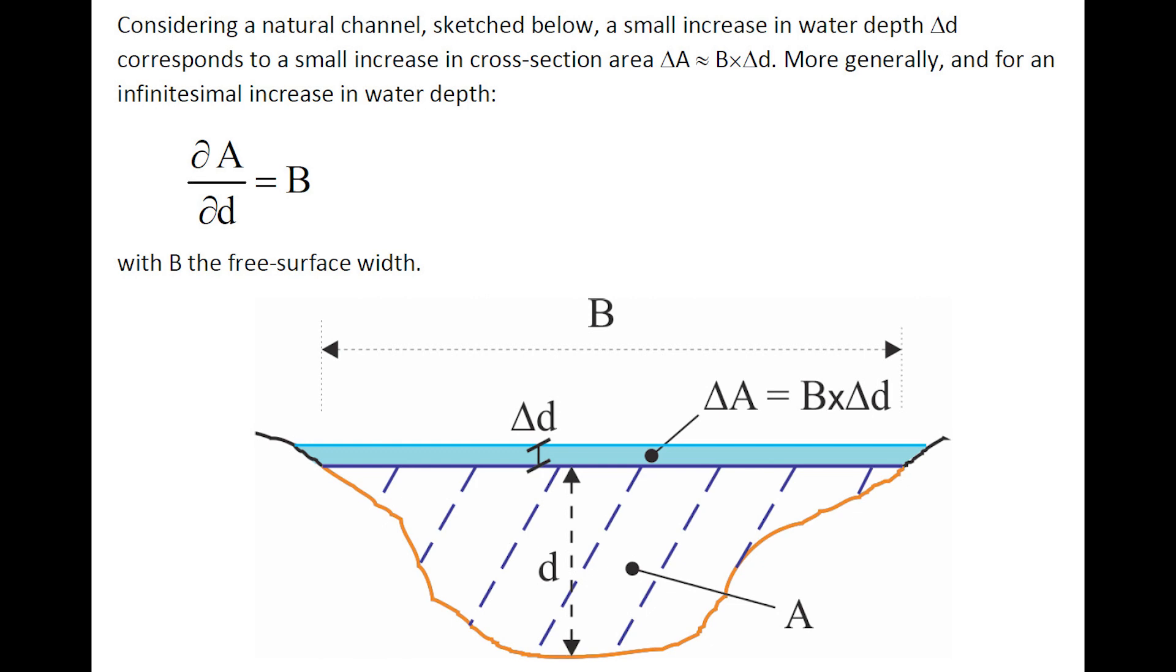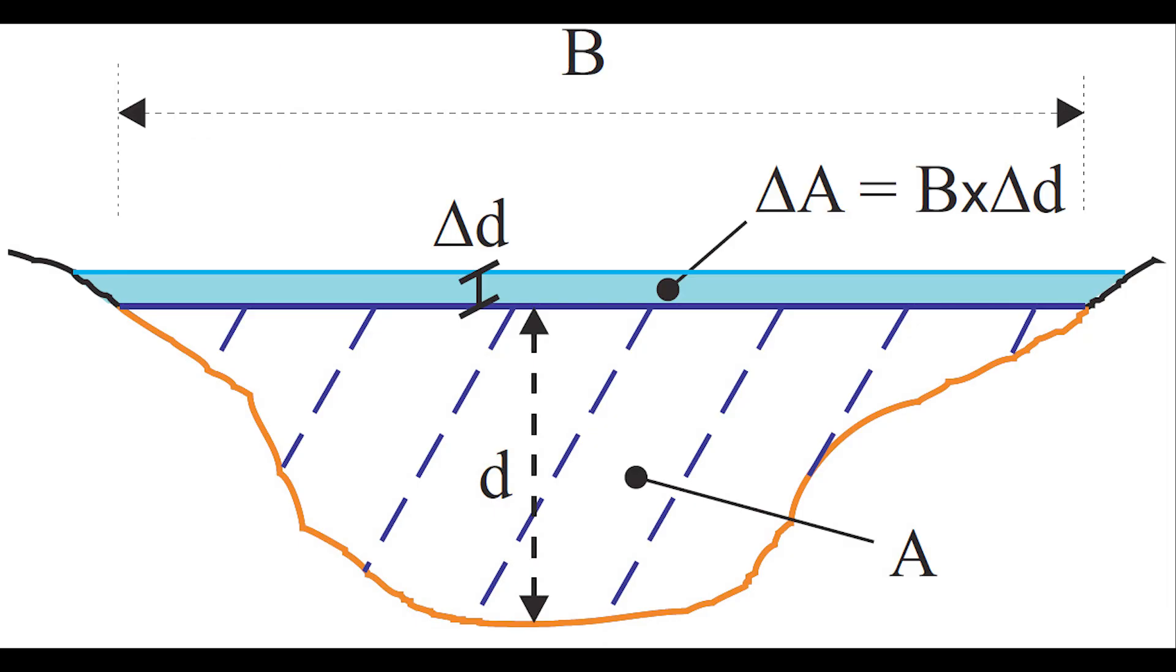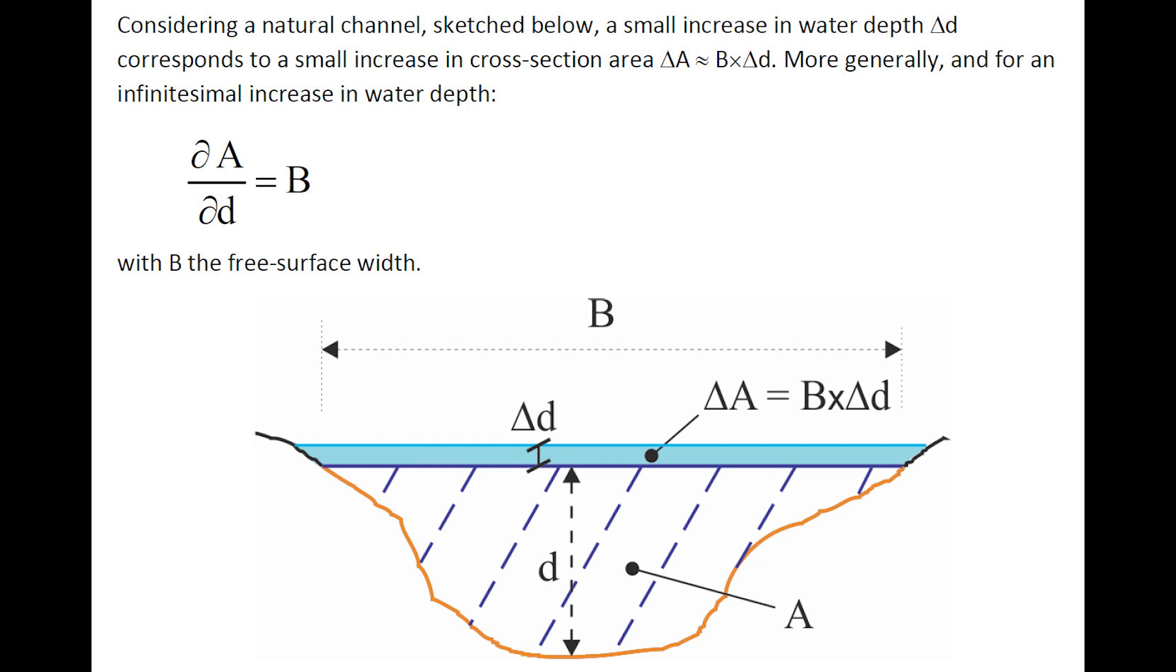Considering a natural channel, sketched below, a small increase in water depth Δd corresponds to a small increase in cross-section area ΔA = B×Δd. More generally, for an infinitesimal increase in water depth, ∂A/∂d = B, with B the free surface width.